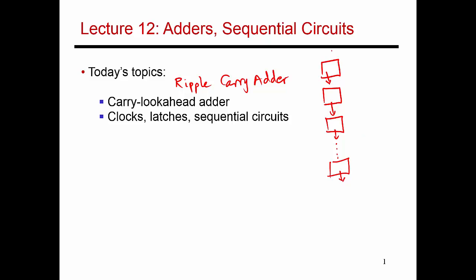Going through one of these add units takes about a handful of sequential logic delays. Let's say it takes about five gate delays to go through one of these add units, and this might equal some number, let's say 100 picoseconds. Now if I have to do this sequentially 32 times, the overall add operation is going to take 3,200 picoseconds. So this can be a fairly slow process if I'm doing a 32-bit add and doing it sequentially one bit at a time.